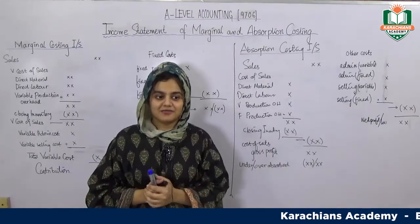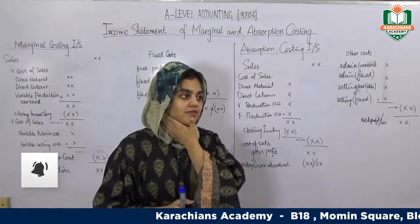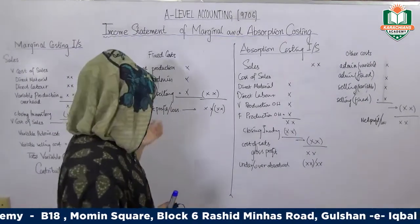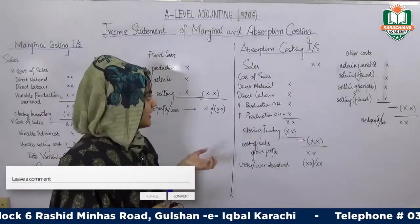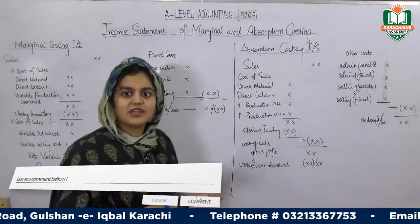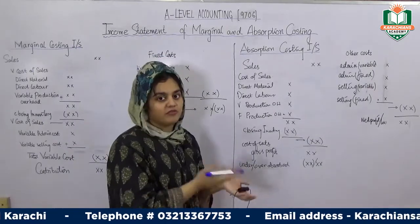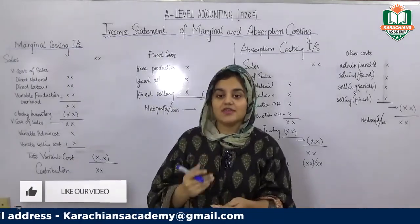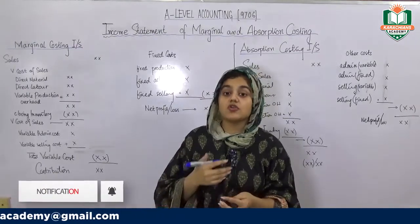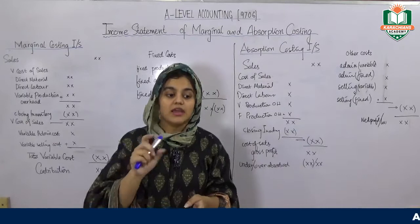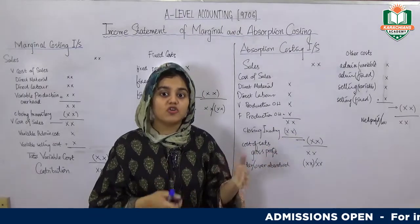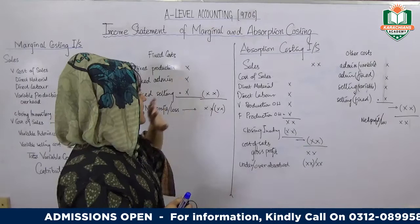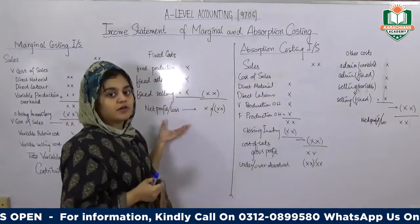Hello everybody, assalamu alaikum, this is Nashwa and today we will be learning about the AS topics — the income statement of marginal and absorption costing. There is a lot of confusion: why are we reading both? What is the difference between these two? We are talking about net profit or net loss, but these are two costing techniques.